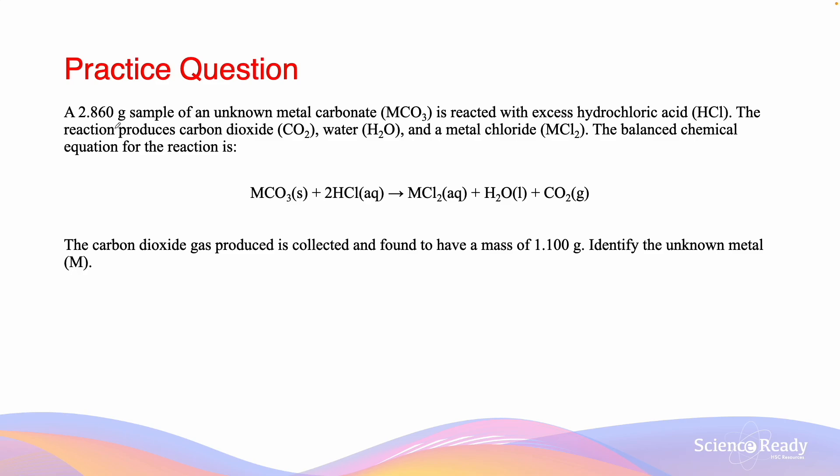A 2.860 gram sample of an unknown metal carbonate MCO3 is reacted with excess hydrochloric acid HCl. The reaction produces carbon dioxide CO2, water H2O, and a metal chloride MCl2. The balanced chemical equation is MCO3 plus 2HCl forms MCl2 aqueous, H2O, and CO2. The carbon dioxide gas produced is collected and found to have a mass of 1.100 grams. Identify the unknown metal M.